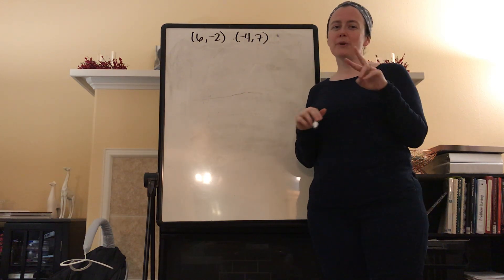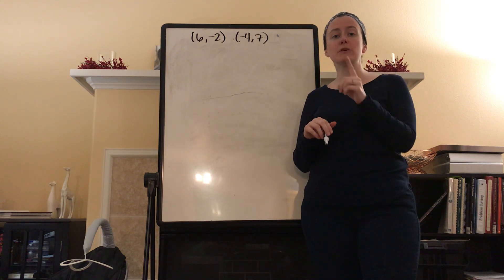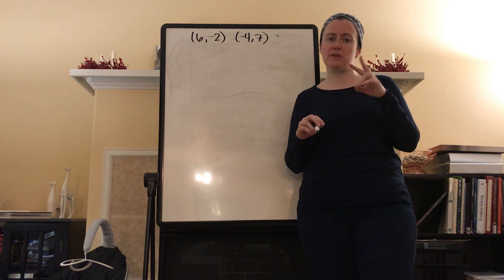Okay, so very first thing we have two points here. We have the point (6, -2) and the point (-4, 7). First thing we're going to find is the distance between these two things.